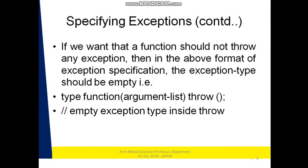If we want a function to throw no exception at all, then in the exception specification the exception type should be empty — that is: type function(argument list) throw(), with an empty pair of parentheses.